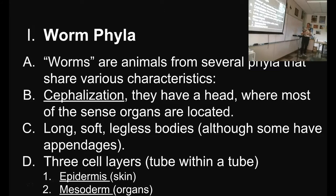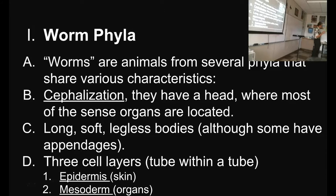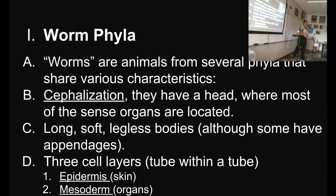These are long, soft, legless bodies, but some do have appendages. Some of their bodies have bumps, and the bumps on the segments help them crawl around. But it's not a leg — they can't move it independently of the body. It's just a nub that sticks out on the side that they use to anchor themselves. So these are long, soft, legless bodies, and they have three cell layers.